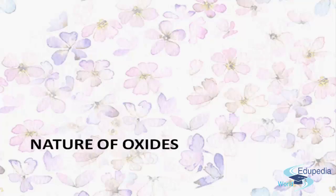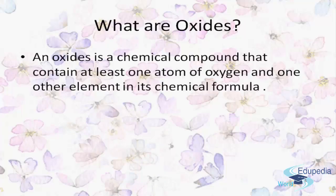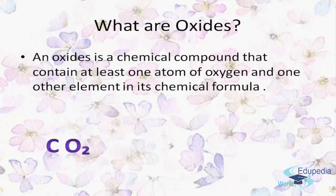Before starting with the nature of oxides, let's understand what oxides are. Oxides are chemical compounds that contain at least one atom of oxygen and one other element in their chemical formula. For example, carbon dioxide and water — you can see there are two elements: oxygen and another metal or non-metal.